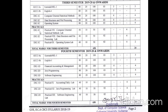For practicals in the third semester: Practical Paper 7 is Computer Oriented Statistical Methods Lab (50 marks, 40 external, 10 internal), Practical Paper 8 is Data Structure and File Processing Lab (50 marks), and Practical Paper 9 is Operating System Lab (50 marks, 40 external, 10 internal). Total third semester marks are 650 and 24 credits.